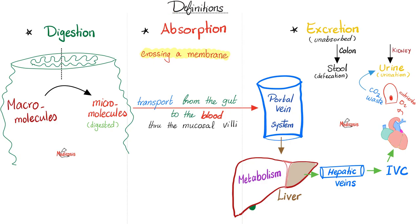A matter of definitions: digestion is converting macromolecules into smaller micromolecules — breaking them down. Why? Because only then will you be able to absorb them across a living biomembrane, which is the membrane of your small intestine. Then we transport them to the blood — venous blood in the territory of the portal venous system. The tributaries of that system will take you to the liver for metabolism.